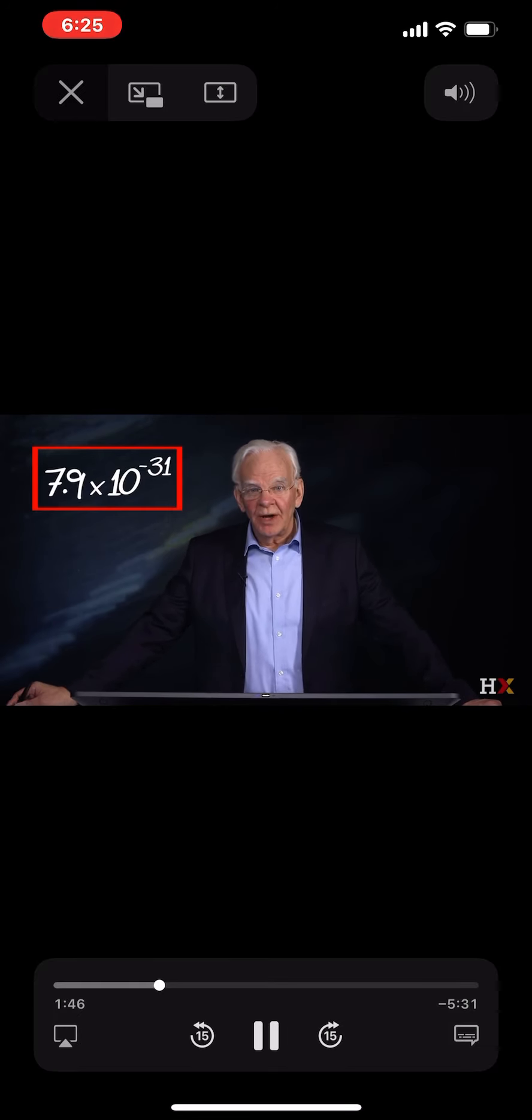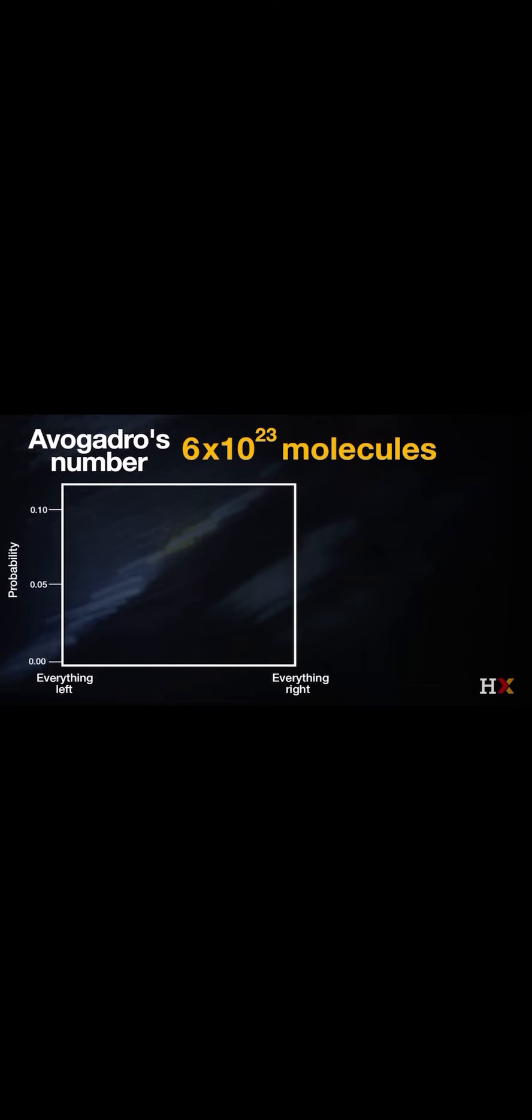Now, if I go to Avogadro's number, which is 6 times 10 to the 23 molecules, if I plot the probability of that, that is an extremely narrow line right in the center.